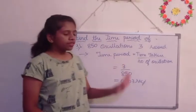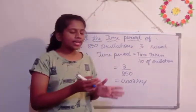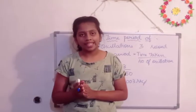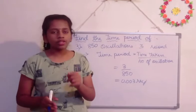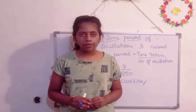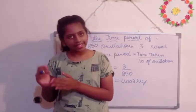So, when we divide 3 by 850, we get 0.003 seconds. So, to complete one oscillation, the time required is 0.003 seconds. Got it?